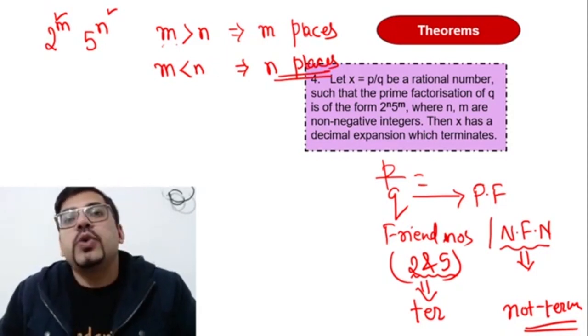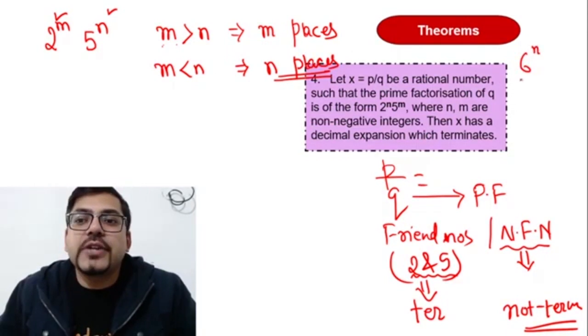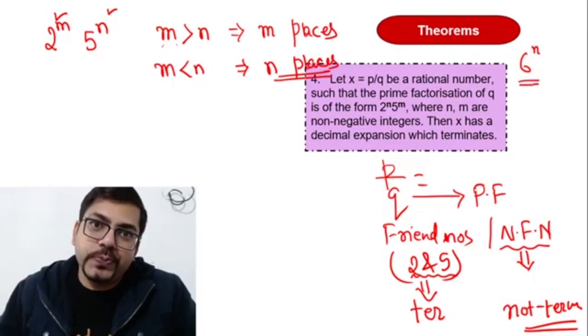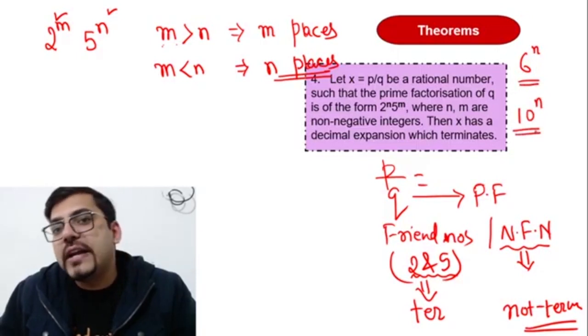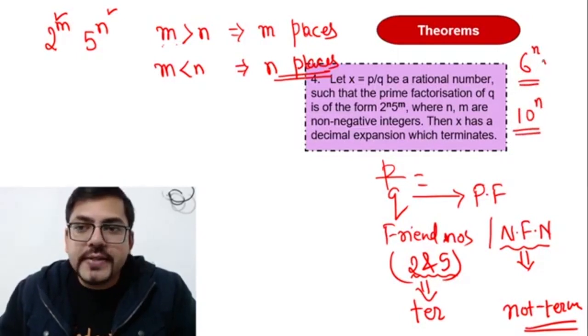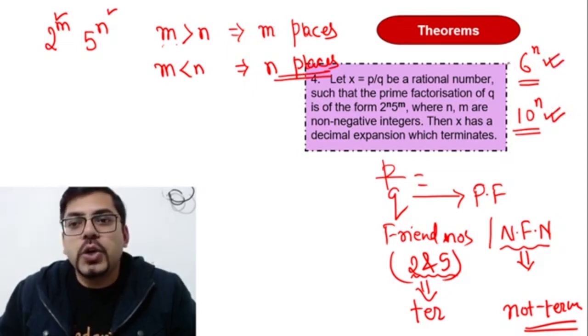And here only you may get one more type of question like prove that 6 raised to power n does not end with 0, or prove that 10 raised to power n will always end with 0 only. So these types of questions again require just simple concept of prime factorization - that you have to multiply 2 and 3, 2 into 3 is 6, so 2 into 3 whole raised to power n you will write.